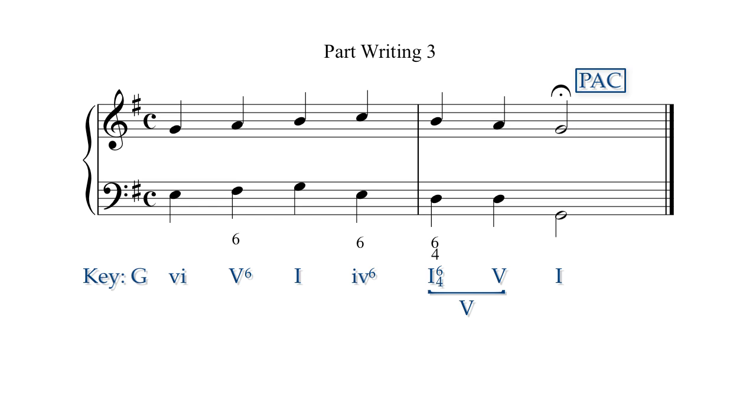Now let's part-write the inner voices. The bass has the root and the soprano has the third in the opening chord. We need a fifth and another root, a B and another E. The only way to fit these notes in between the bass and the soprano is to put the B in the tenor and the E in the alto.